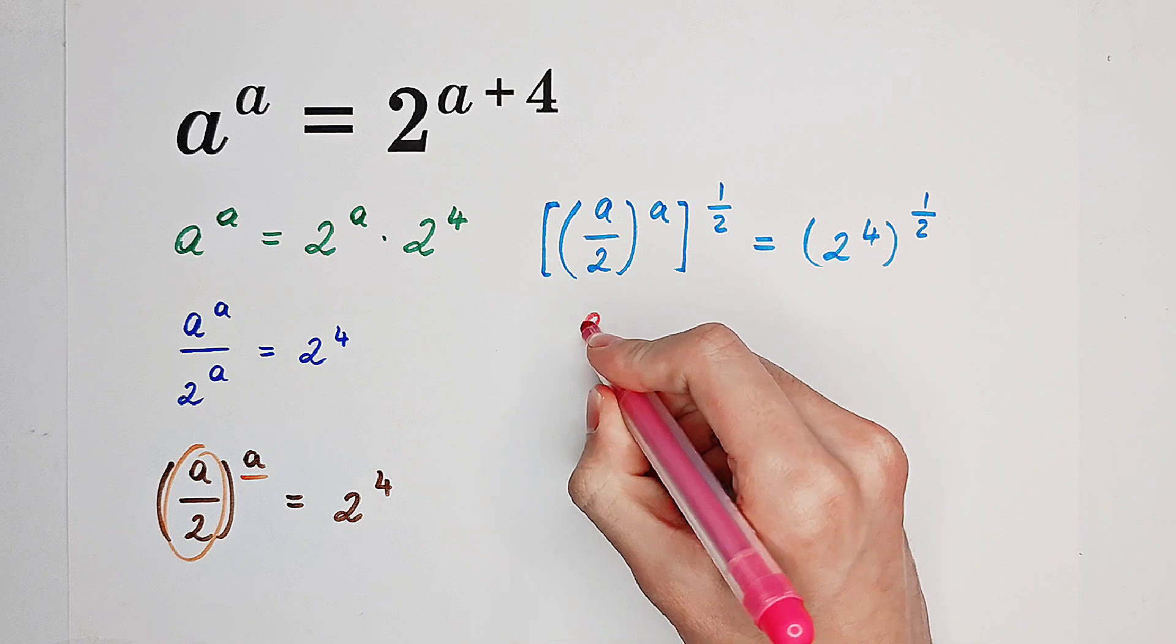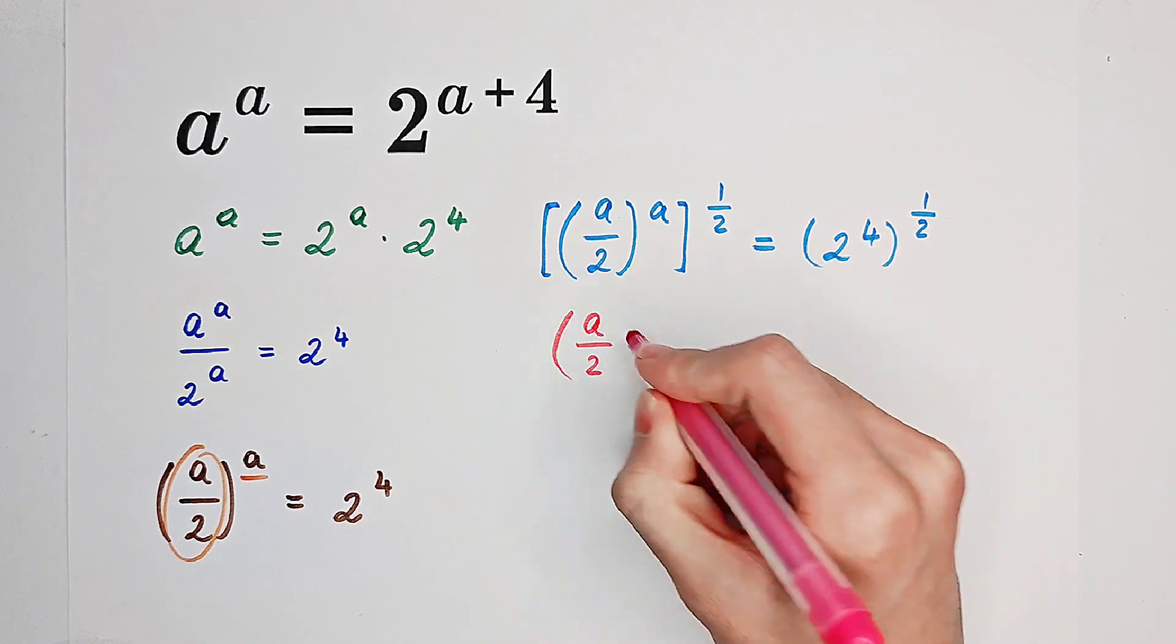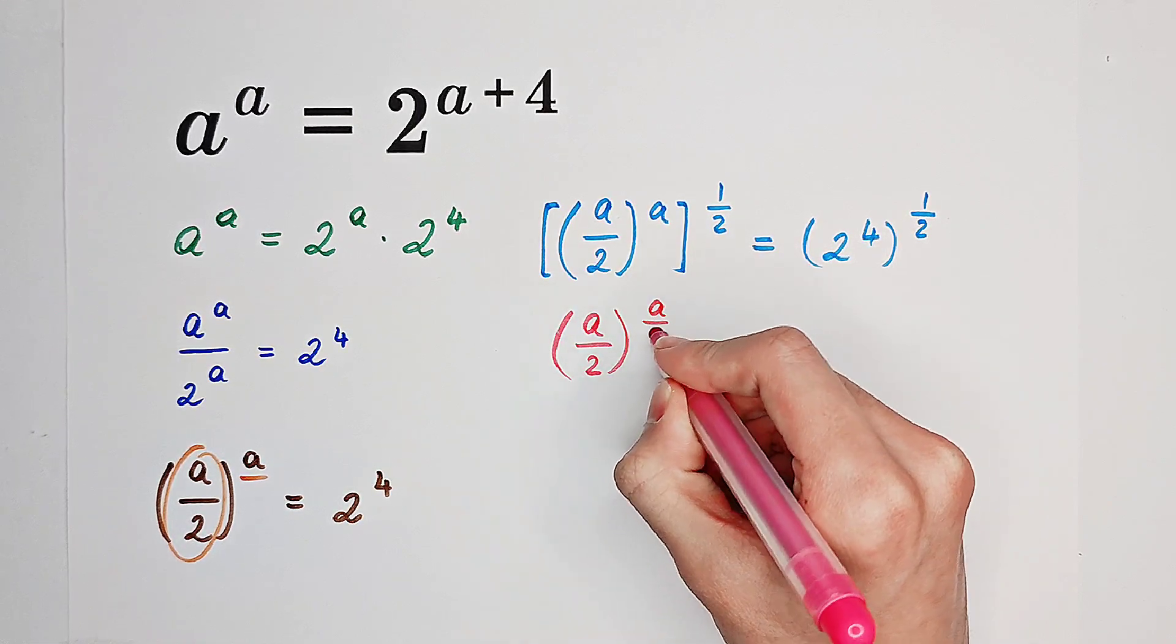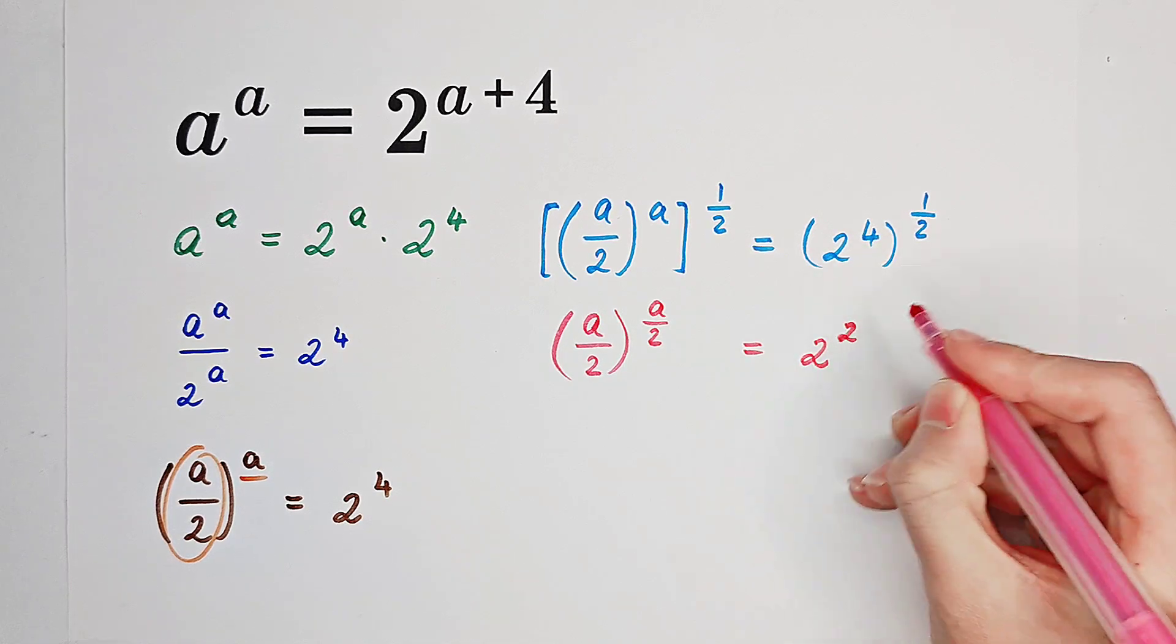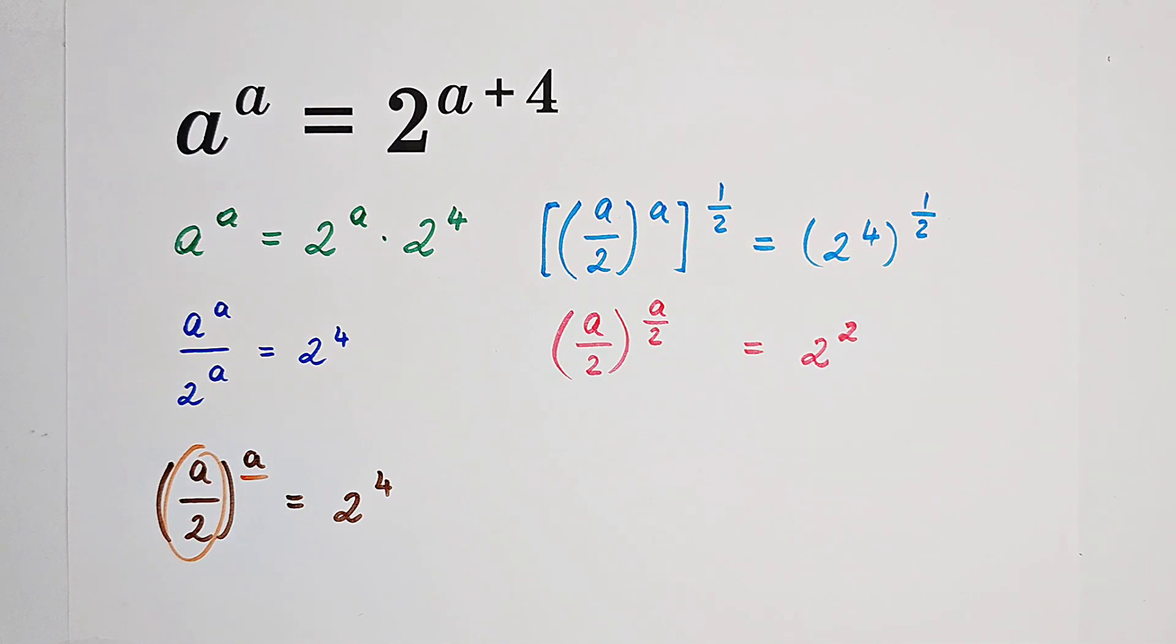Here, we have A over 2 all to the power of A over 2. And here, we have 2 to the power of 2, which is equal to 4.